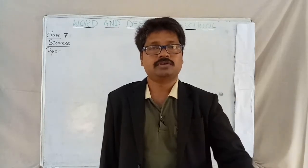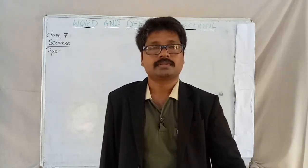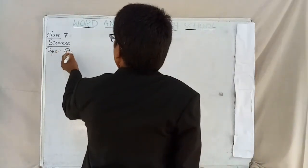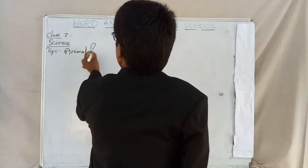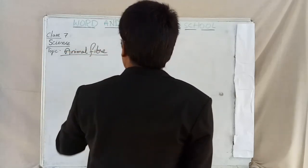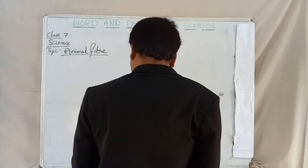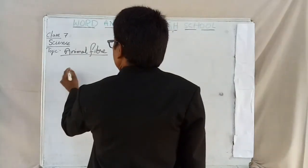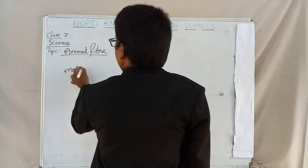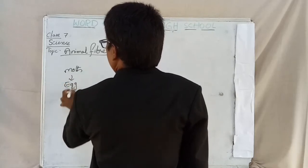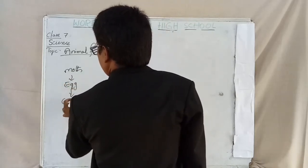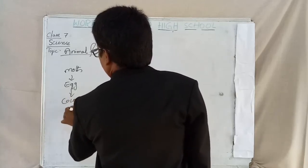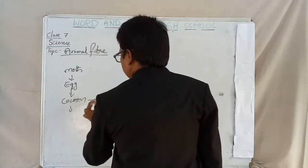What is the concept that we have been talking about? We have been talking about animal fiber. In this chapter, we have talked about moth to egg, egg to cocoon.